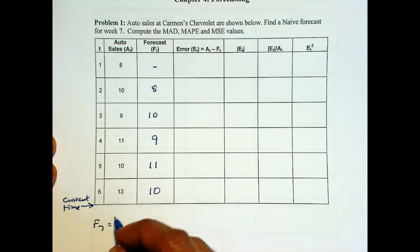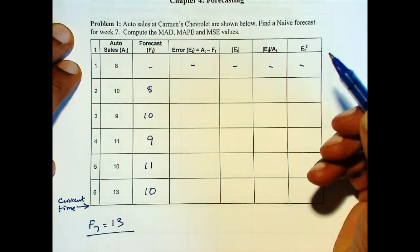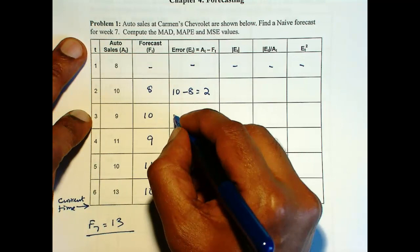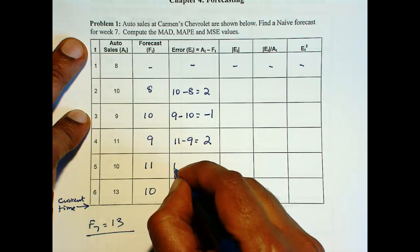Now the error is actual sales minus forecast. So this is 10 minus 8, so that is 2. 9 minus 10 is minus 1. 11 minus 9 is 2. 10 minus 11 is minus 1. 13 minus 10 is 3.